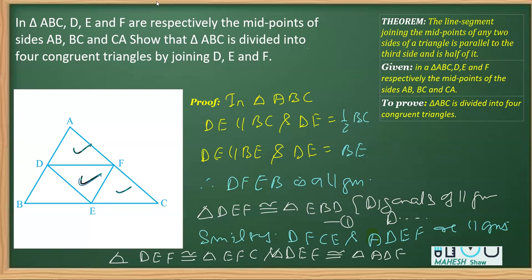From equations one and two, we can conclude that all four triangles are congruent. Therefore, triangle ABC is divided into four congruent triangles.